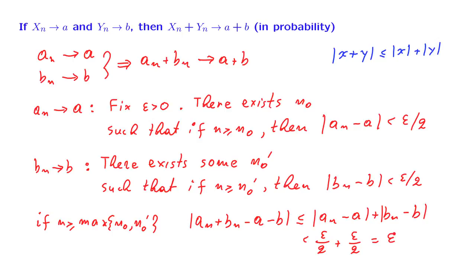So what have we shown? That if an converges to a and bn converges to b, so that all these relations hold, then if time n is large enough, the difference between an plus bn and a plus b is going to be less than epsilon. And this is true for every positive epsilon — but that's just the definition of convergence of this quantity to that quantity. This completes the proof of this elementary relation about convergence of numbers.